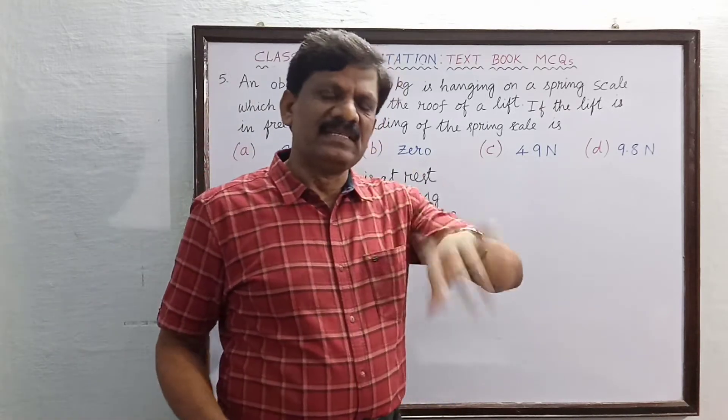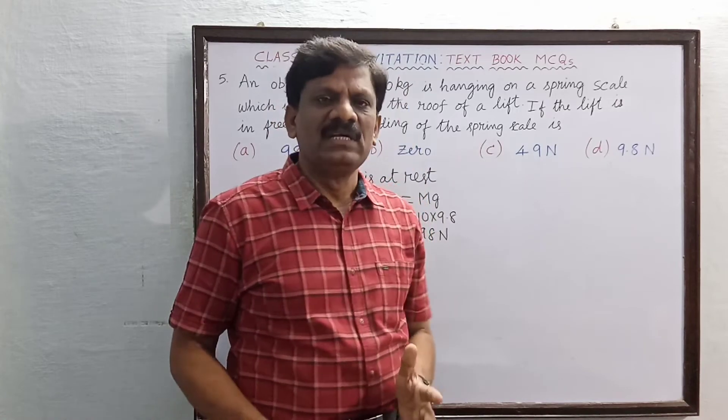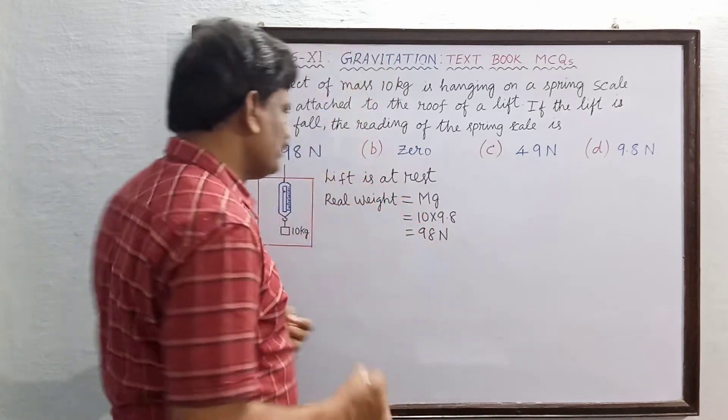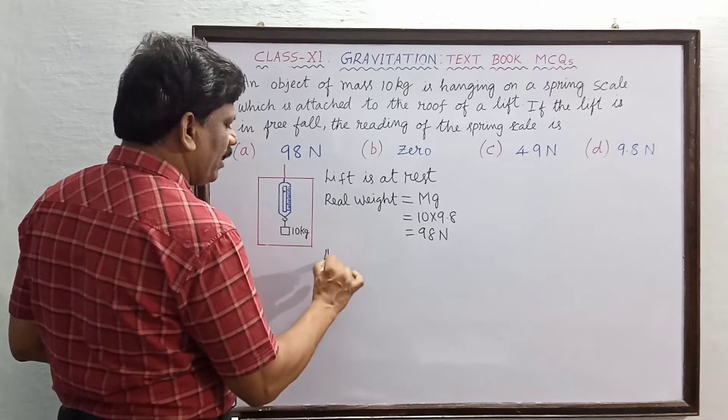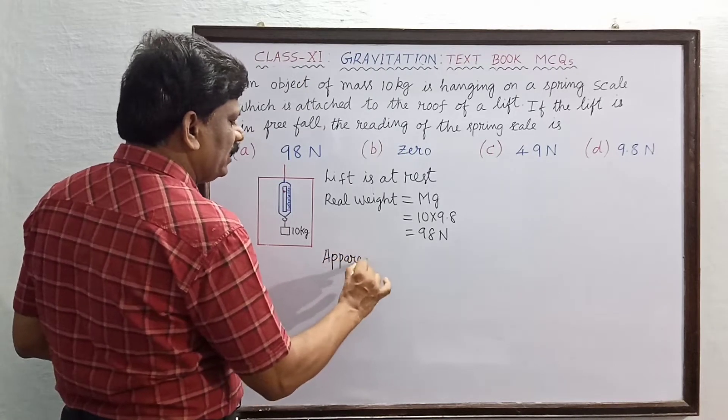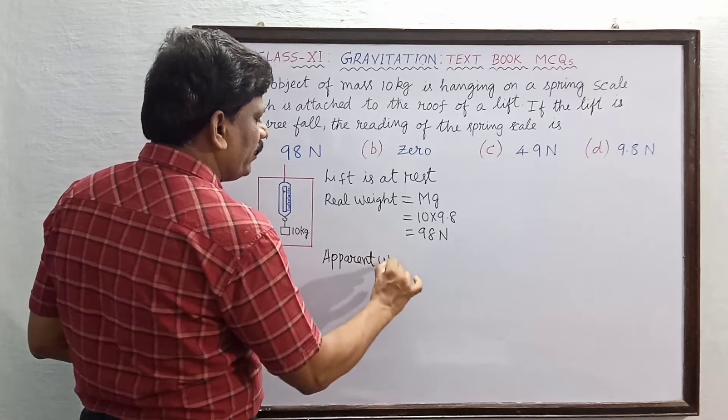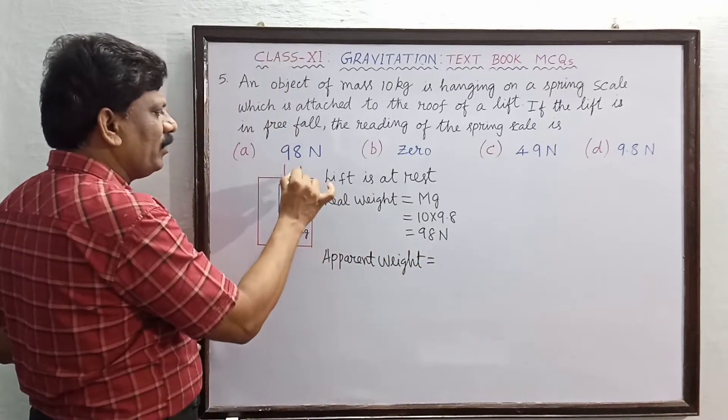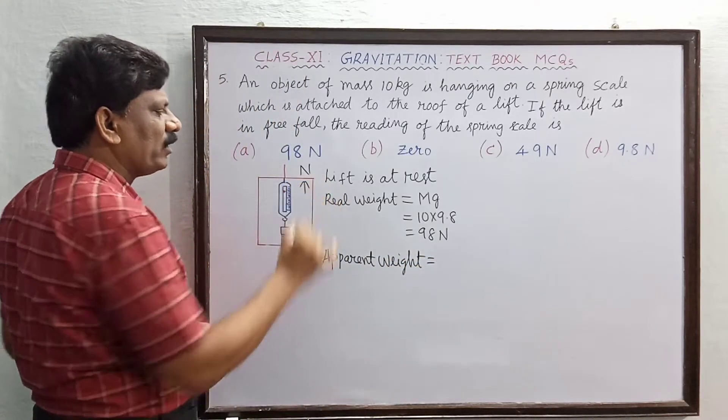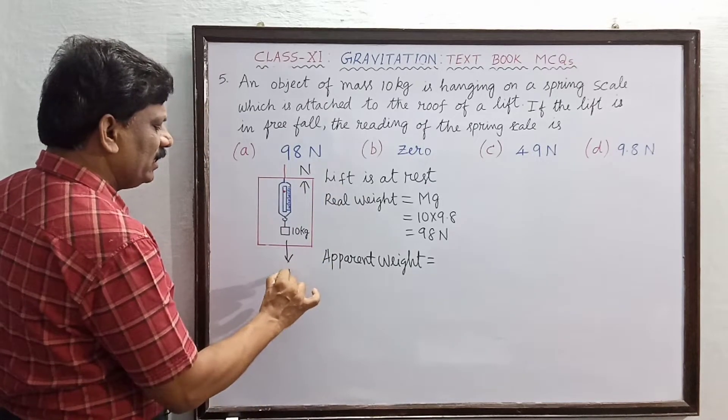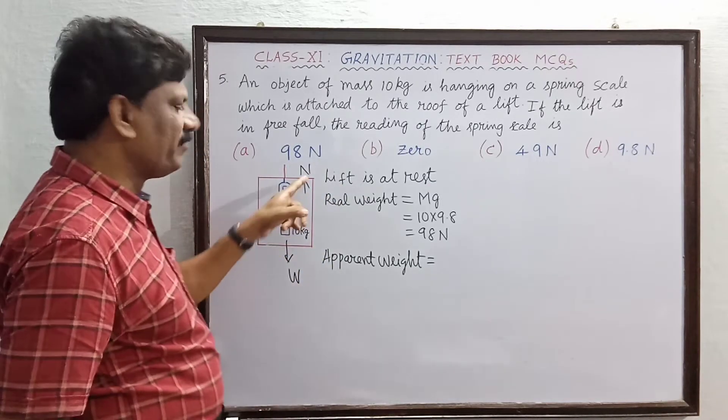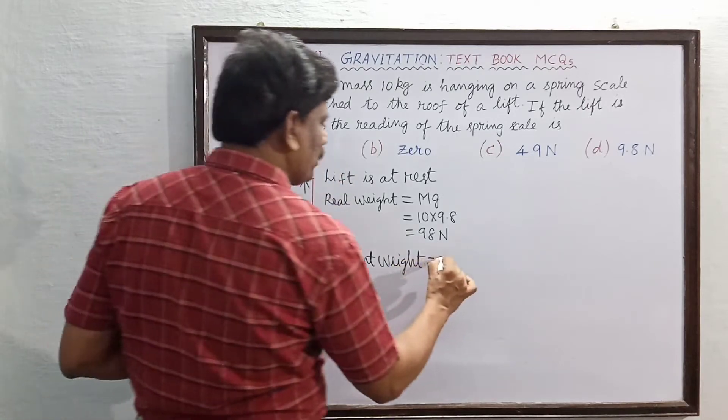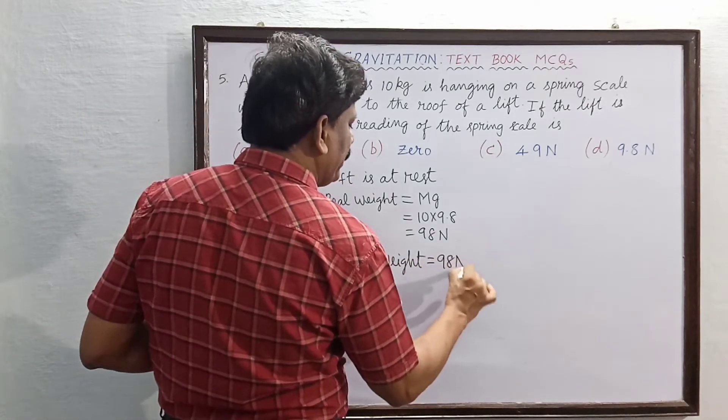This is called action force. The reaction force which is equal to the apparent weight, apparent weight is equal to the reaction force, that is the normal force of reaction. You have the weight, normal force of reaction upwards, that also is equal to 98 newton. This is when the lift is at rest.